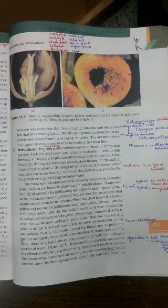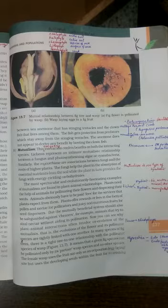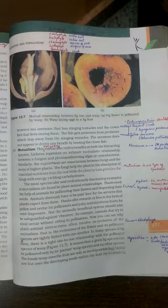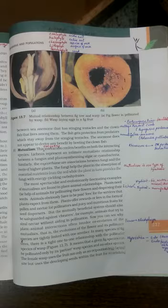Benefits are given by the plants to the seed dispersal or pollinating agents. But the mutually beneficial system should also be safeguarded against the cheaters.